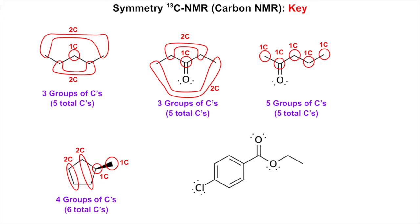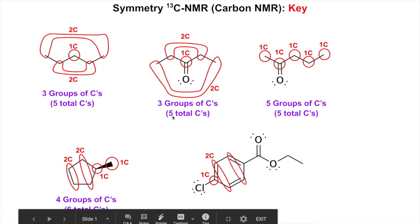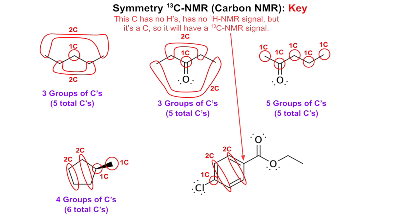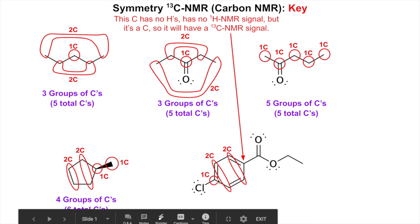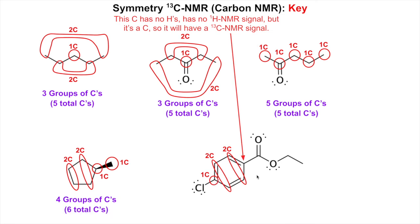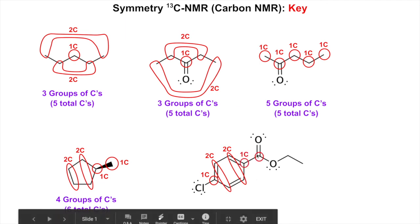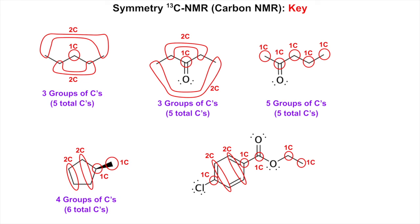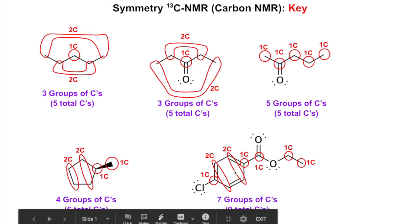Next molecule: one carbon here, two carbons here. This carbon has no hydrogens but still gives a carbon NMR signal. There are two carbons there, and more carbons with no hydrogens still giving carbon signals. That carbon has two hydrogens, and finally one carbon at the end. Total: seven groups of carbons for a molecule with nine total carbons. The molecule has some symmetry around the benzene ring, with pairings on each side — that's why you get only seven groups despite having nine carbons.